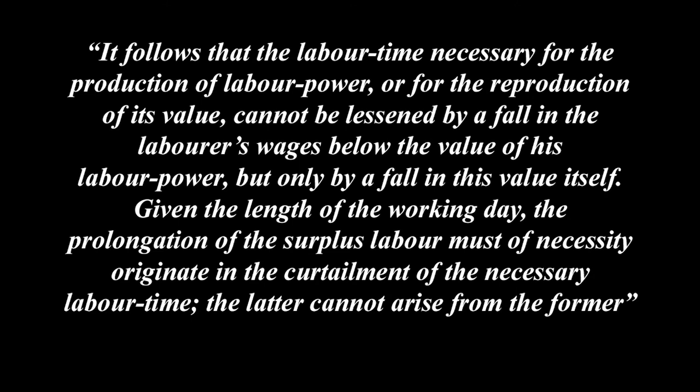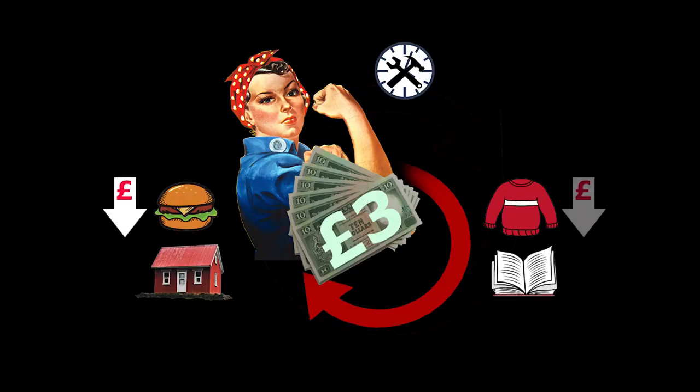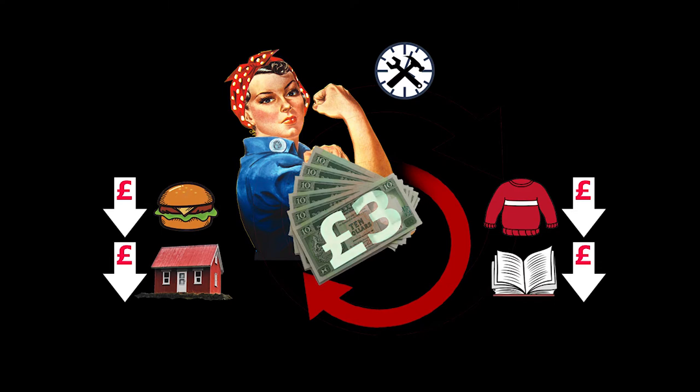It follows that the labour time necessary for the production of labour power, or for the reproduction of its value, cannot be lessened by a fall in the labourer's wages below the value of his labour power, but only by a fall in this value itself. Given the length of the working day, the prolongation of surplus labour must of necessity originate in the curtailment of necessary labour time. What this means is that capitalism must decrease the value of labour power without reducing the ability for workers to reproduce themselves as workers. To do this, the value of commodities directly must be decreased — food, clothing, tools, all the means of subsistence that allow workers to reproduce their labour power — in effect reducing the value of their labour power. The only way this is possible is an increase in productivity.